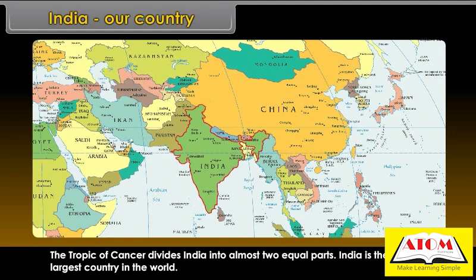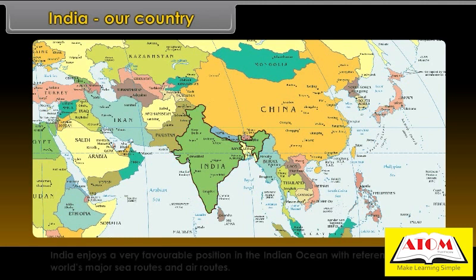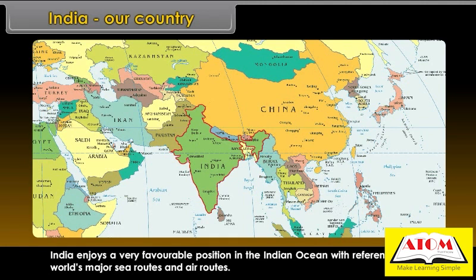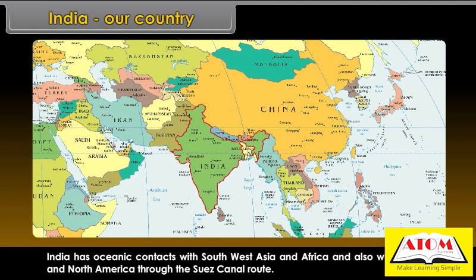India is the 7th largest country in the world. India enjoys a very favorable position in the Indian Ocean with reference to the world's major sea routes and air routes. India has oceanic contacts with South West Asia and Africa, and also with Europe and North America through the Suez Canal route.